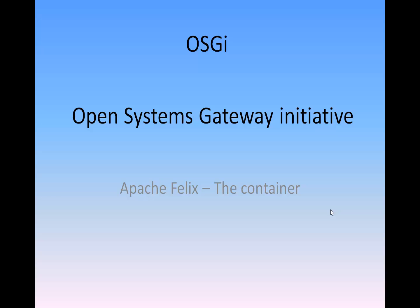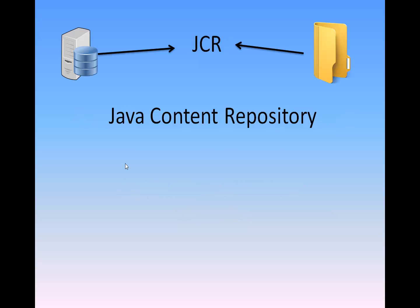Using this model, we're able to create bundled code and import and export between different environments, making updating and testing environments a breeze. A Java Content Repository, or JCR, is an object database that provides different services for storing, accessing, and managing content.